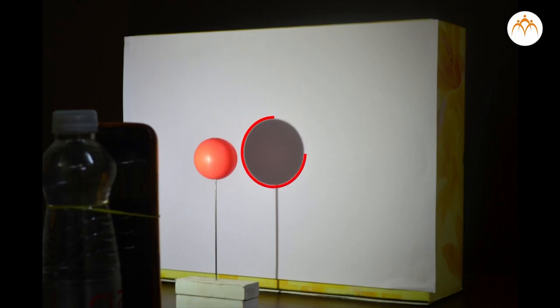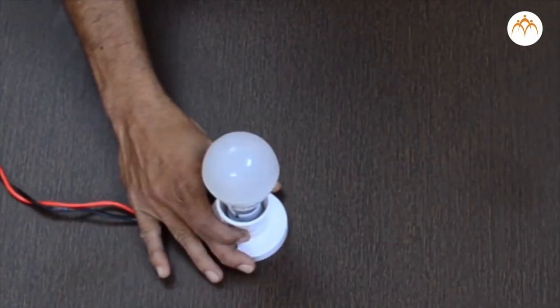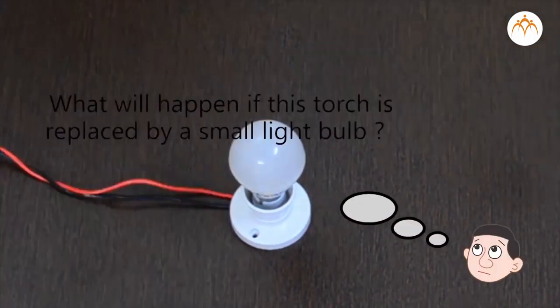This paper screen we can use to get shadow of the ball. When the torch is lit we see the shadow of the ball. It is a dark circle on this paper screen. Torch light is identical to a pointed light source. It is coming out of a very small area.